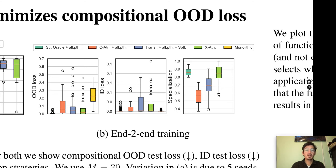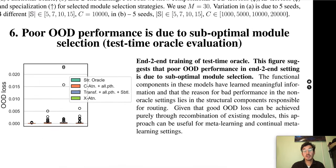The OOD loss is measured on a test set that contains combinations of mathematical operations that were not seen during training. To better understand why non-oracle baselines are unable to reliably achieve systematic generalization, we evaluate the modular baselines in the so-called test-time oracle setting. Here we check every possible path through the modular network during testing and report the performance of the best performing path. In this evaluation protocol, modular solutions tend to achieve low OOD loss, suggesting that poor systematic generalization at test time is due to suboptimal module selection.